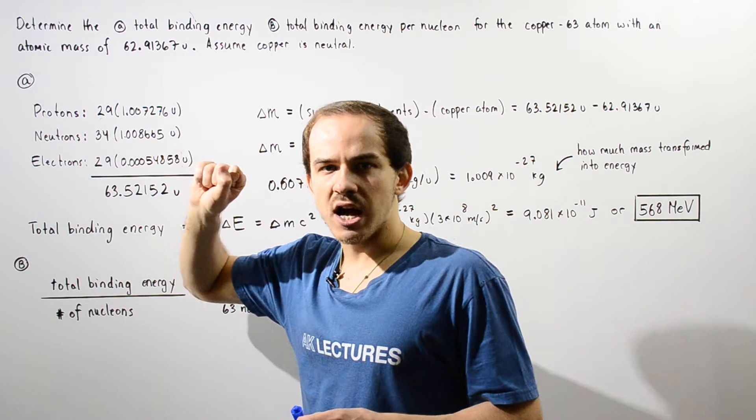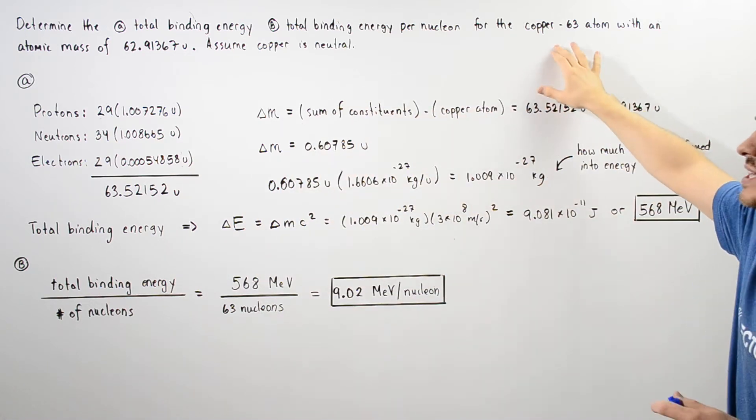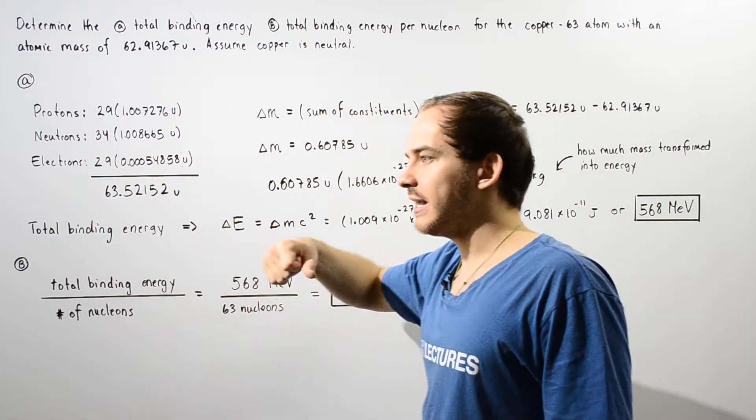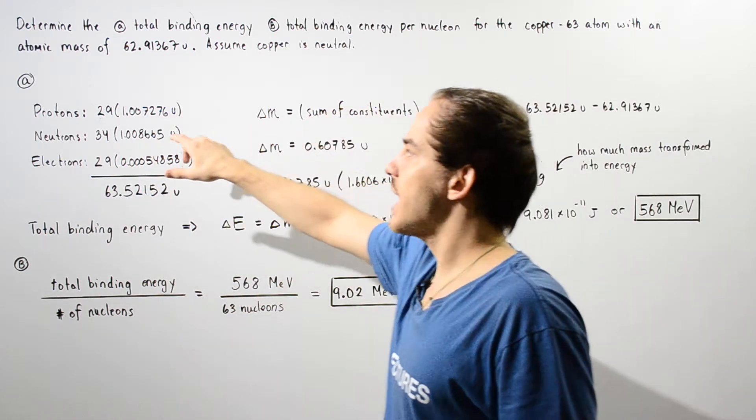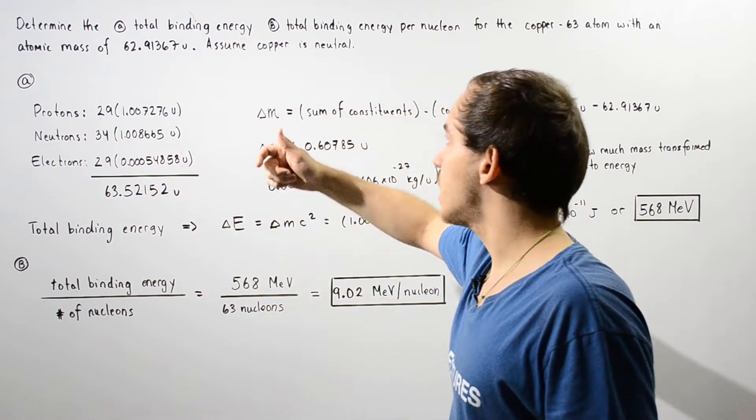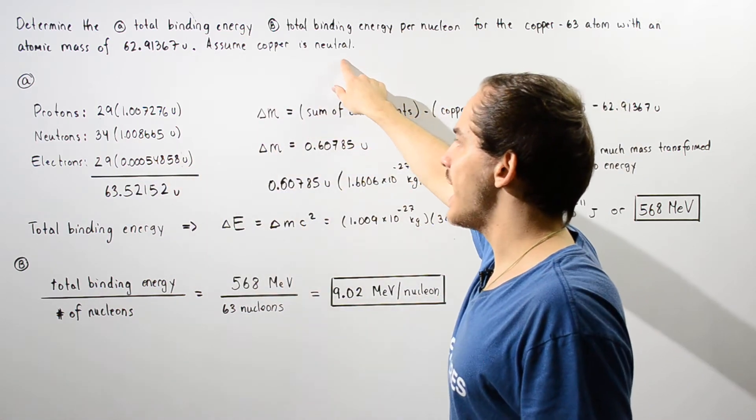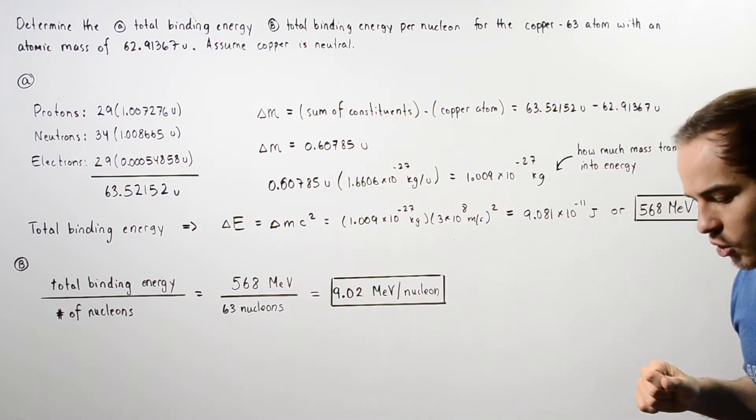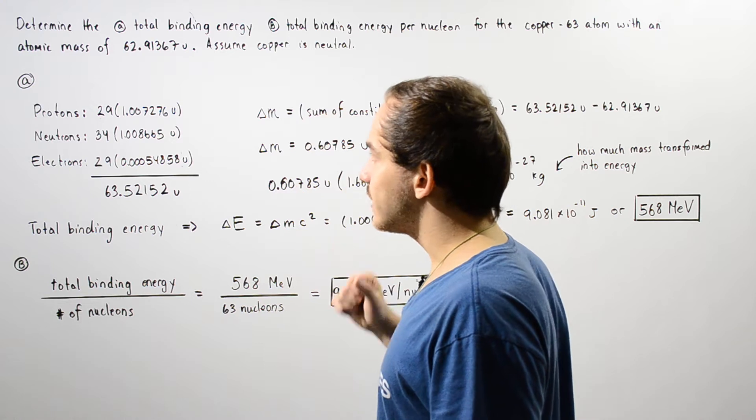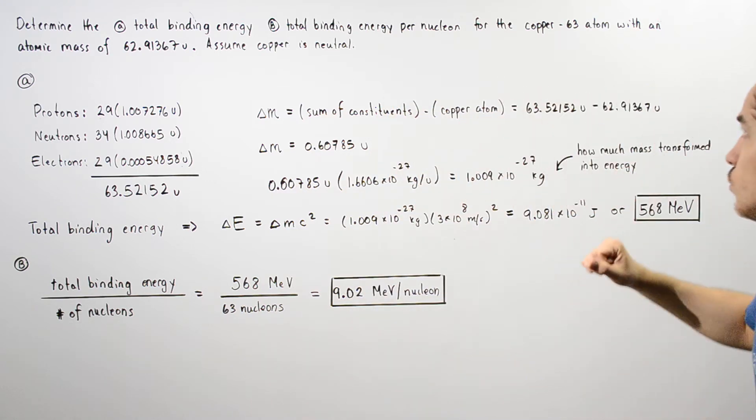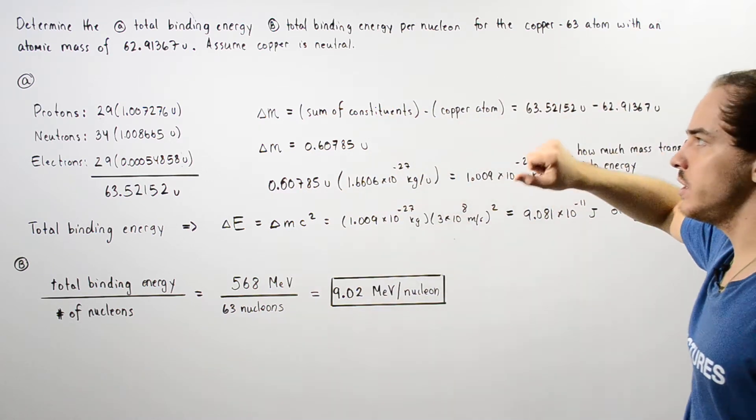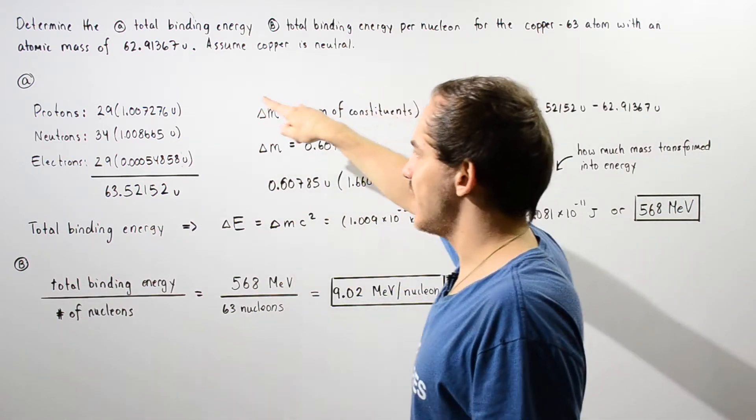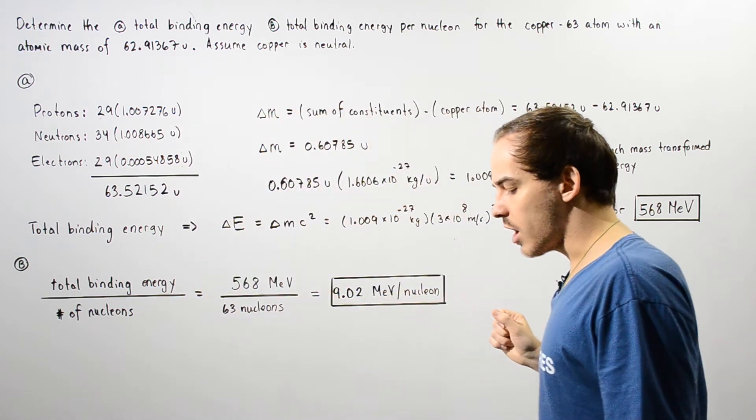To calculate the protons, we simply find what the atomic number of copper is. We take the periodic table and that gives us an atomic number of 29, so we have 29 protons. Since we have a neutral atom, the protons equal the electrons, so we have 29 electrons also. To calculate the number of neutrons in the nucleus, we take 63 and subtract the atomic number, so 63 minus 29 gives us 34 neutrons.